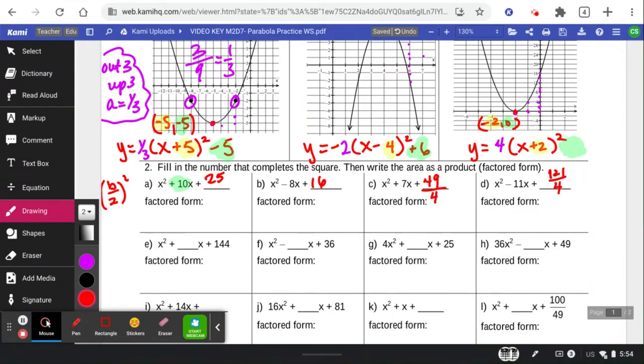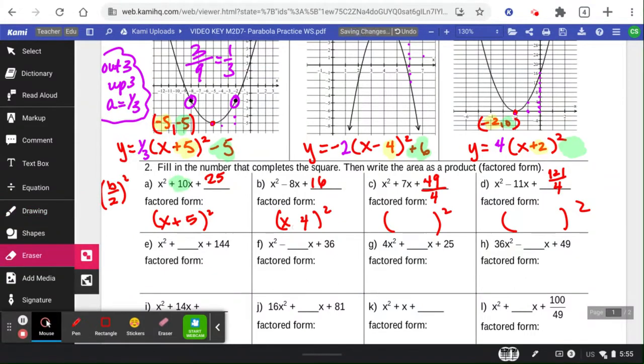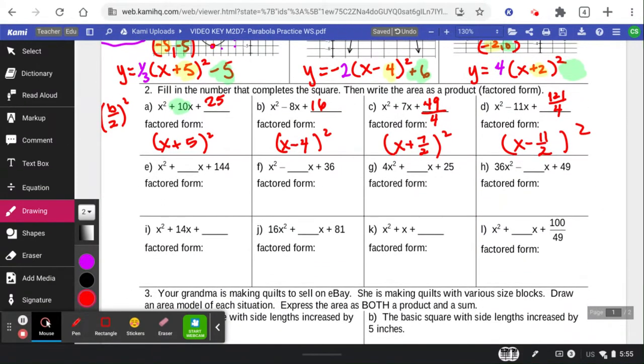Half of 11 is 11 halves. 11 halves squared is 121 fourths. So besides wanting that C value, that number, they also want the factored form. So you can get this number at the back, x plus 5 squared, by taking half of 10, or by taking the square root of 25. Half of negative 8, or the square root of 16. 7 halves, and 11 halves.